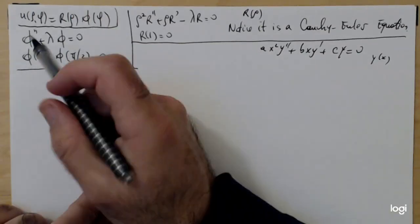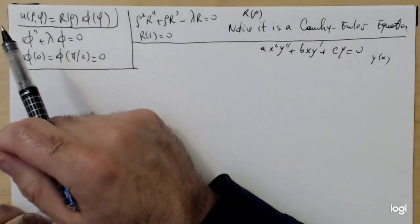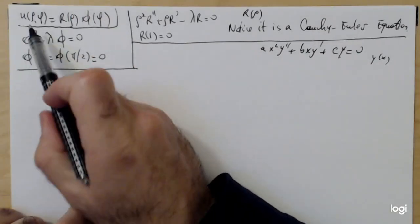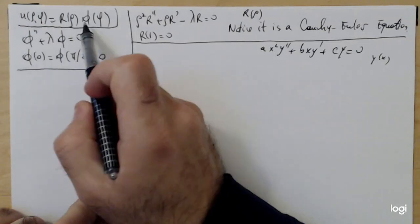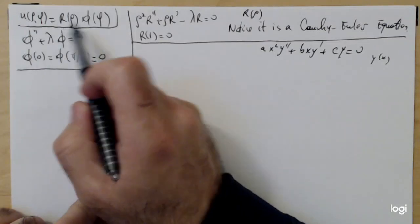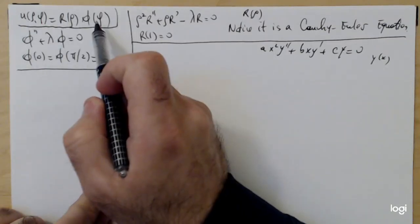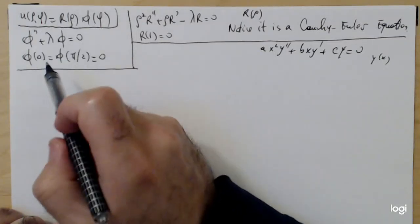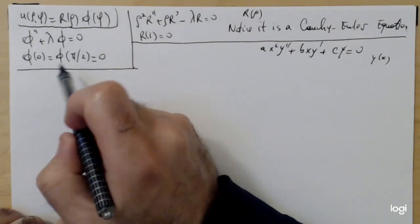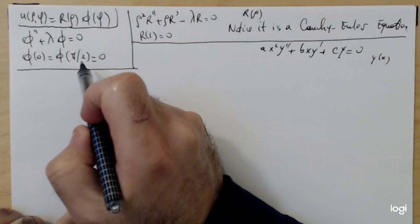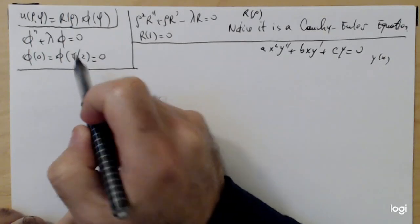Let's continue with what we did last time. U is a function of rho and phi, the temperature. Phi is given by the Sturm-Liouville problem given here.